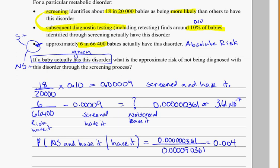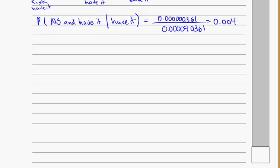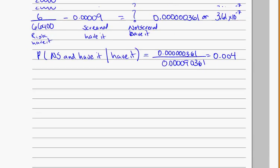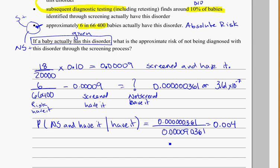We can convert that to a percentage: 0.004 times 100 equals 0.4%. So given they have the disorder, there's a 0.4% chance they're not picked up in screening. That's pretty good — the screening process is quite accurate, with less than 1% of people who have it not being picked up through the screening process.